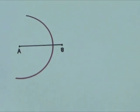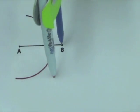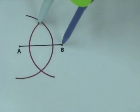Without changing the compass width, move the compass point to B and draw an arc that intersects the previous arc.